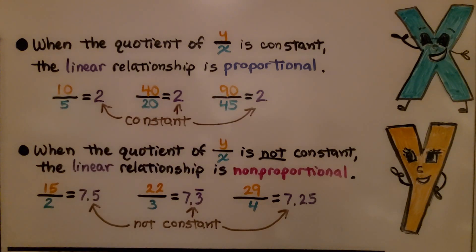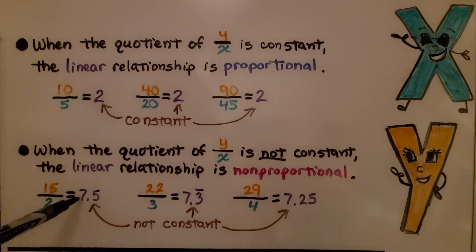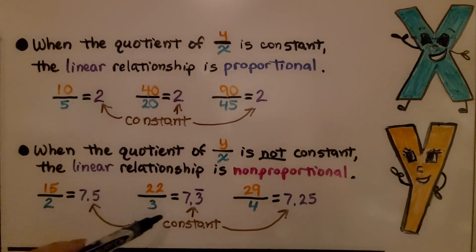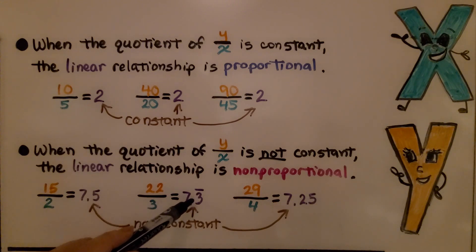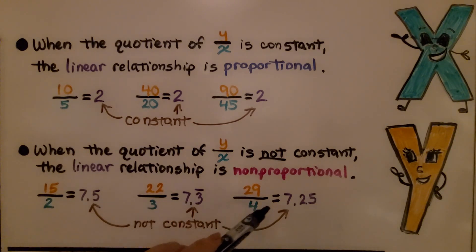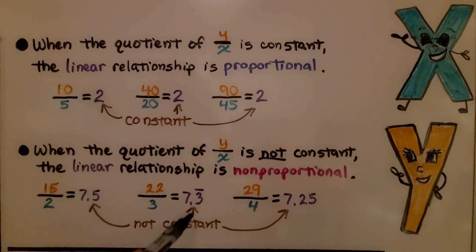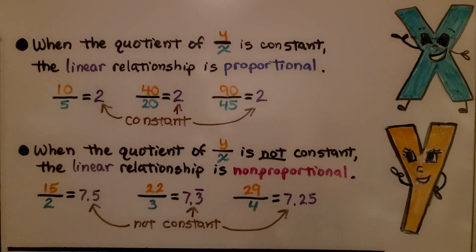When the quotient of Y to X is not constant, the linear relationship is non-proportional. We have 15 halves, which equals 7 and 5 tenths. We have 22 thirds, which equals 7 and 3 tenths. We have 29 fourths, which equals 7 and a fourth. These are not constant, so it's non-proportional.